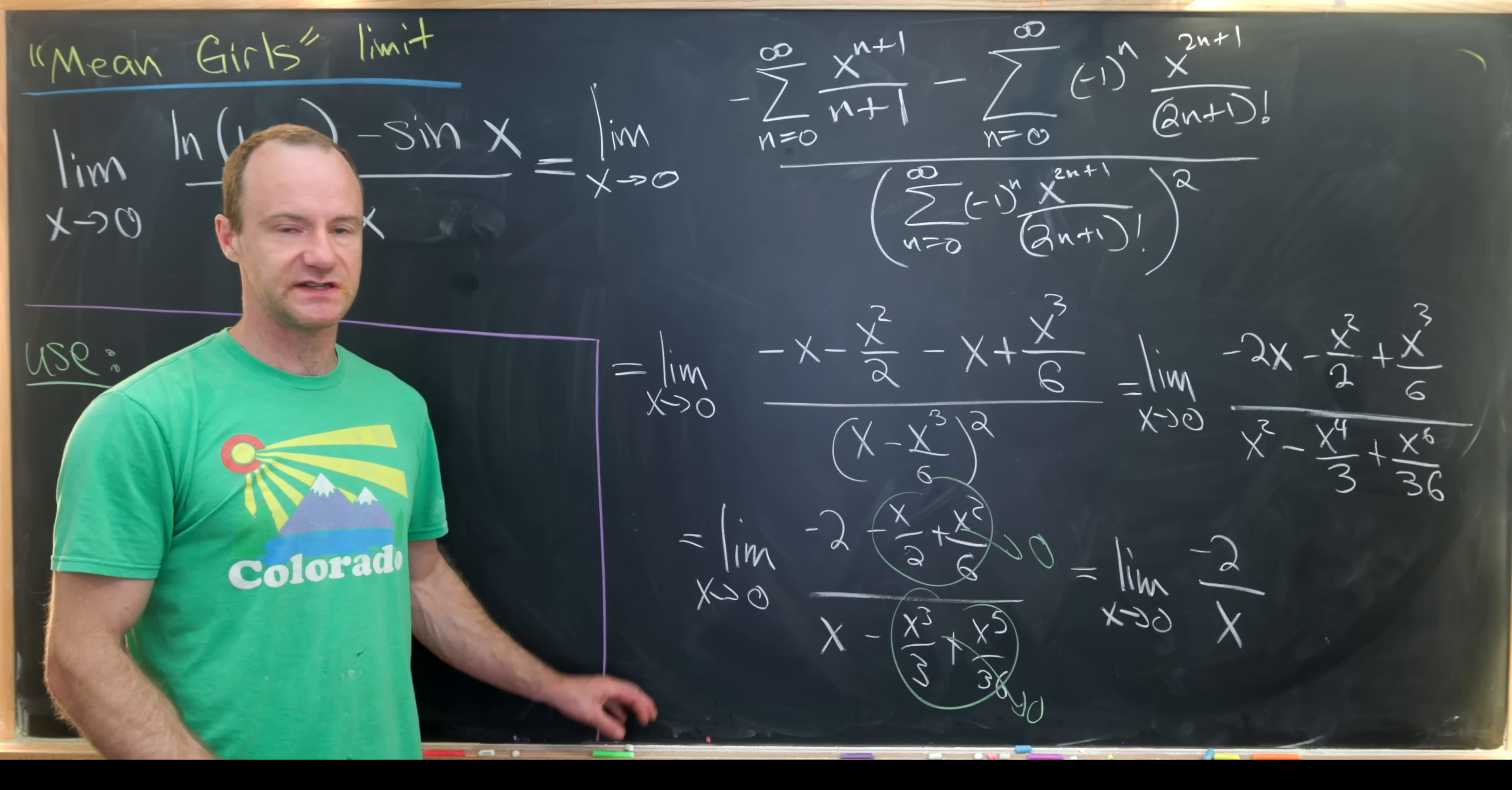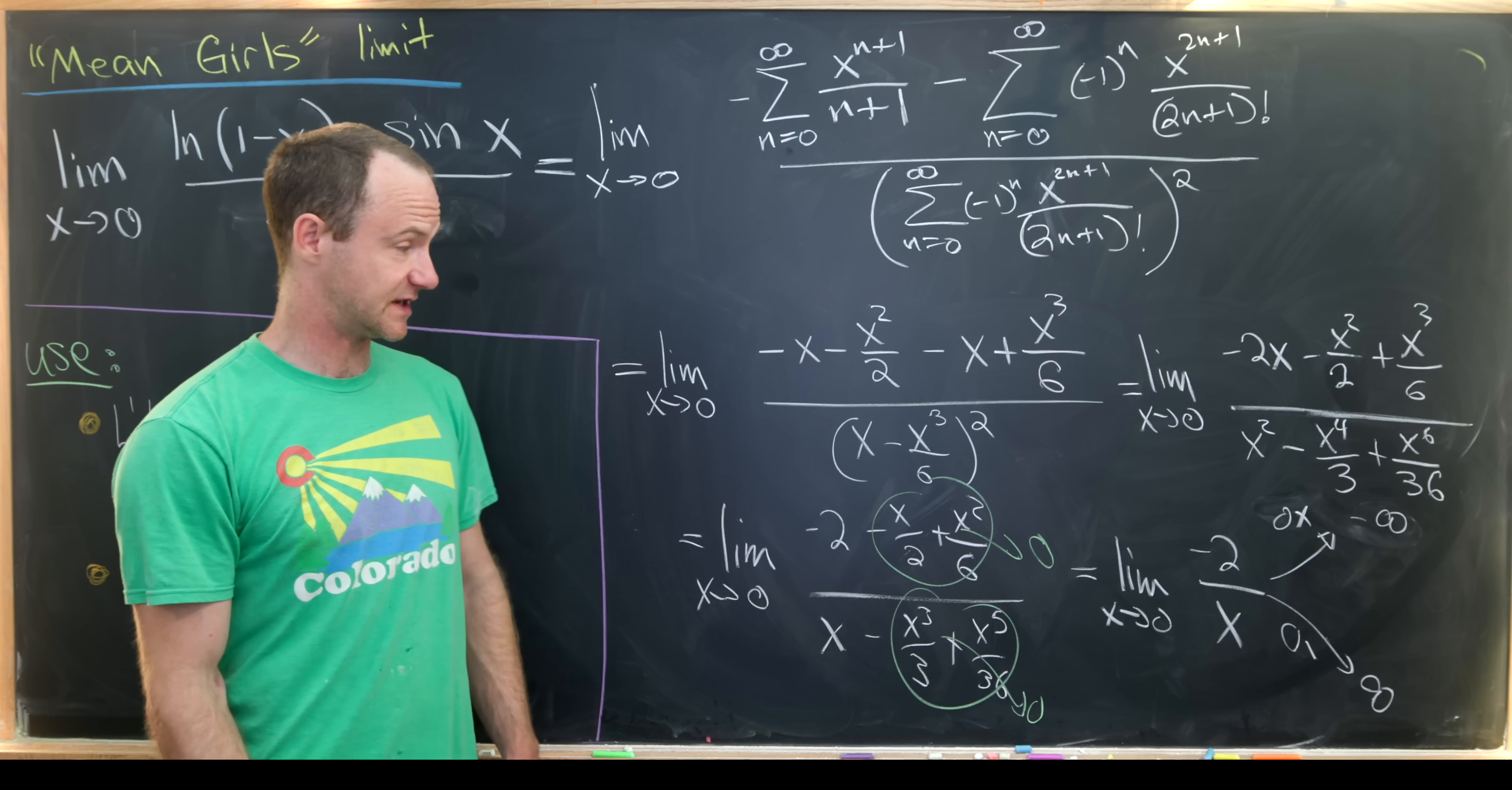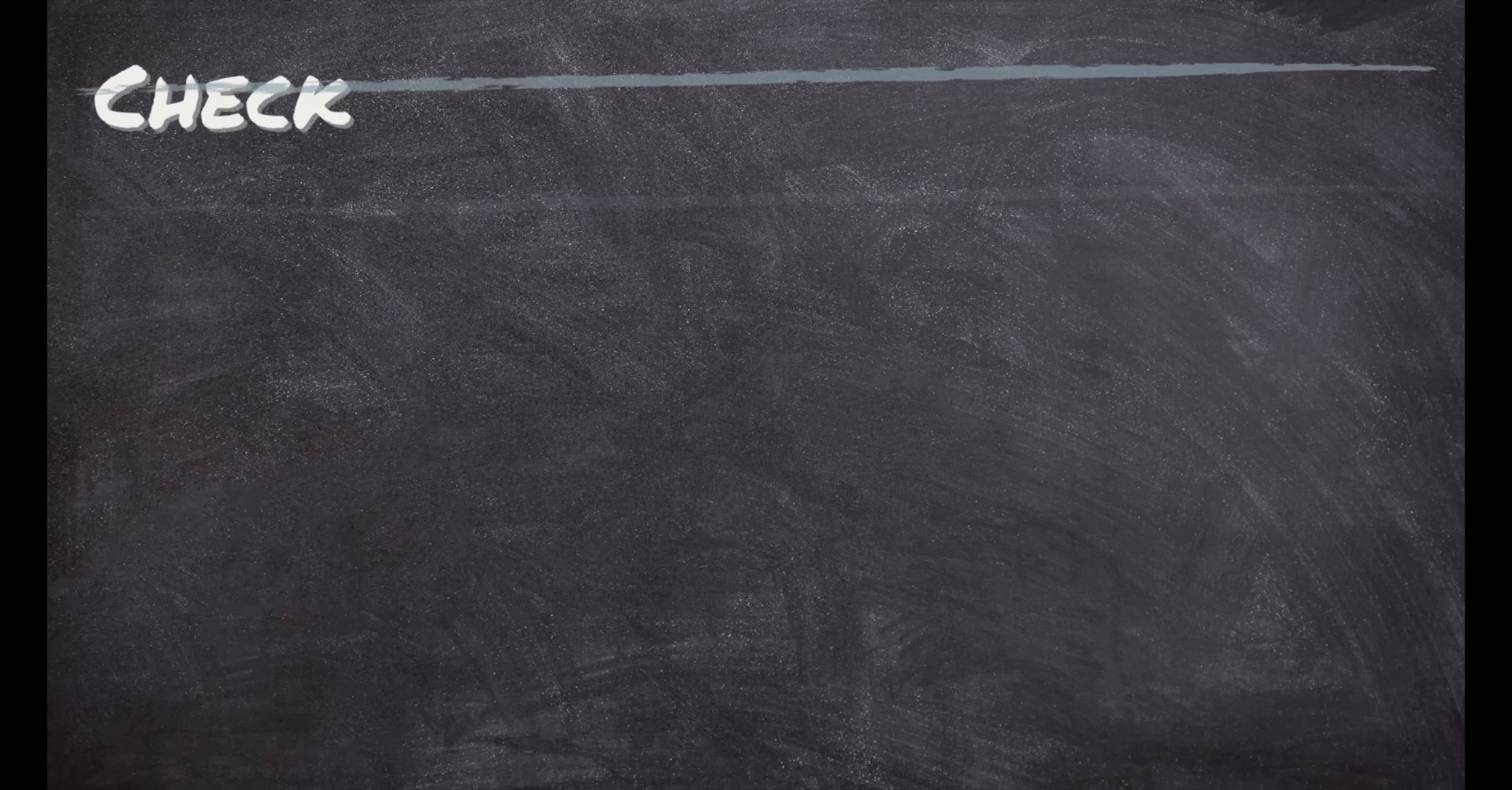But of course, as x goes to 0 from above, that's going to trend off to negative infinity. And then as x trends to 0 from below, that's going to trend off towards positive infinity because the two minus signs cancel. So like I said, this is a little bit of a sketchy way to do it, but I think it's kind of illuminating to see both of these. And that's a good place to stop.